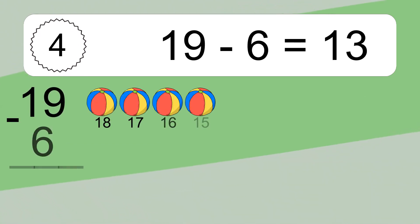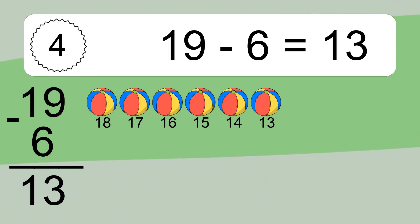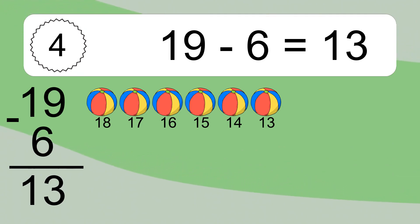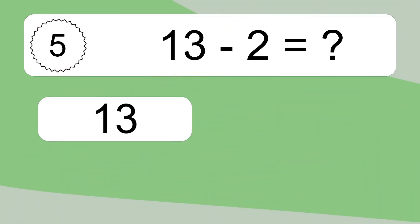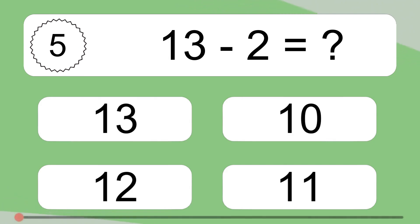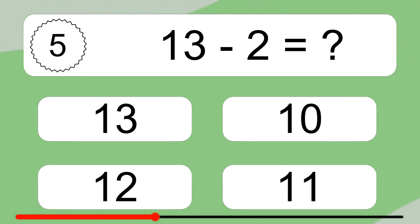19 minus 6 equals what? 19 minus 6 equals 13. Let's count it. 18, 17, 16, 15, 14, 13.